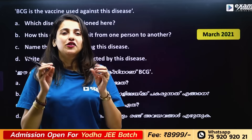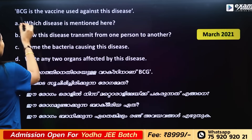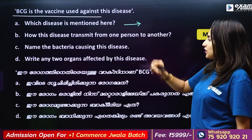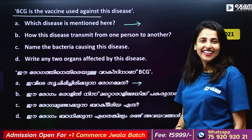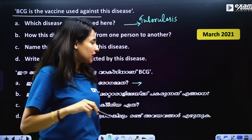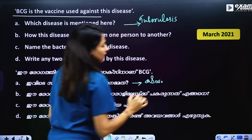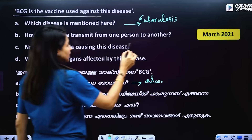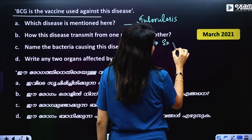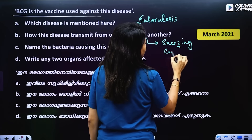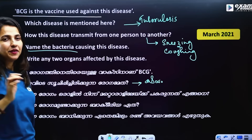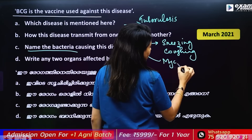BCG is the vaccine used against this disease. BCG is given by injection. The disease is Tuberculosis — if not treated, it will spread further. How does this disease transmit from one person to another? Through sneezing and coughing — the pathogen is carried through the air.